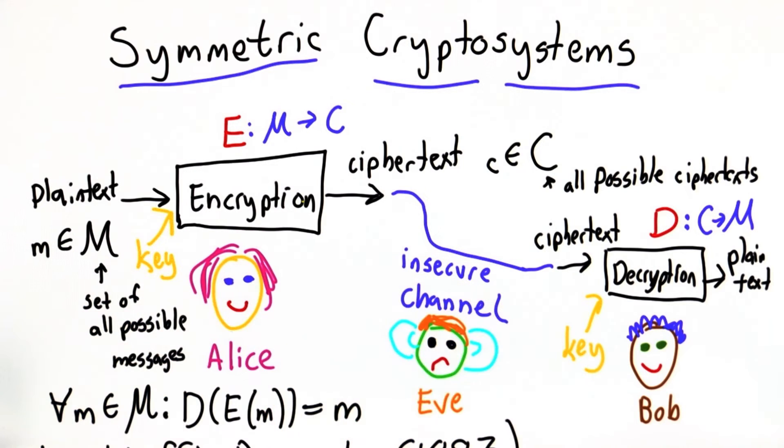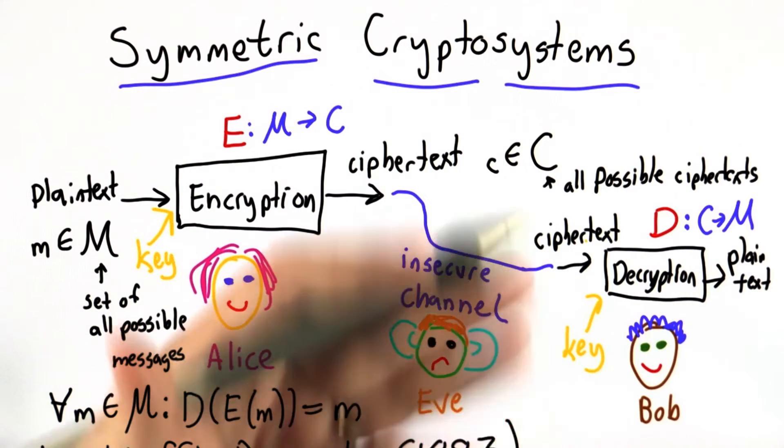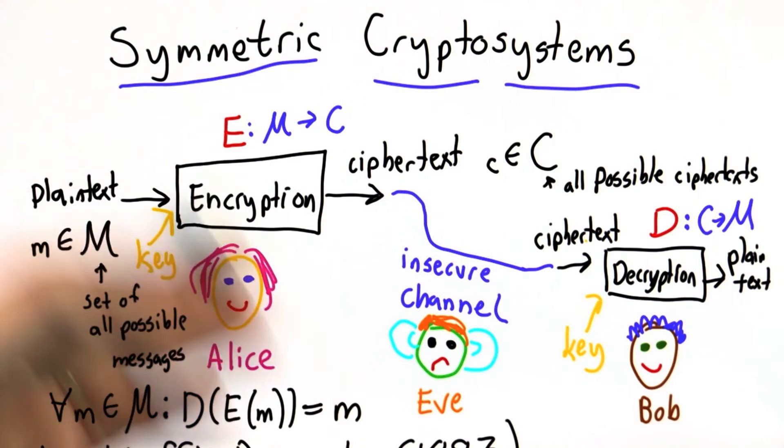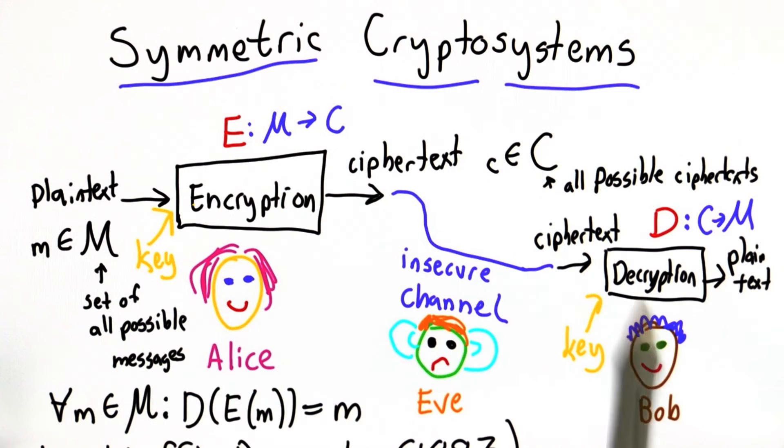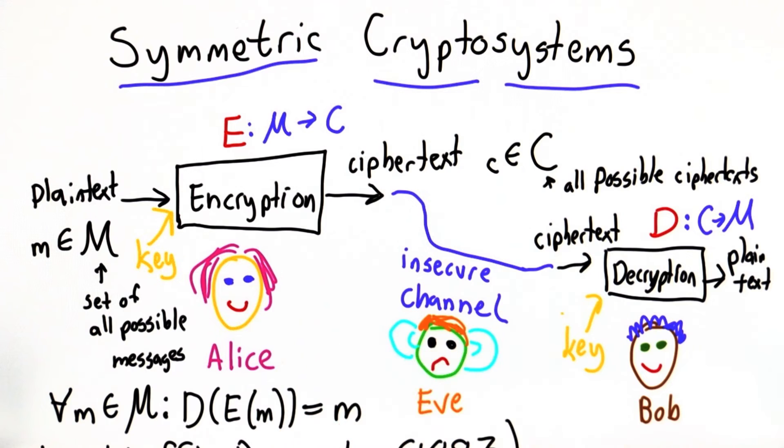If the security relies only on keeping the key secret, well then we can make our encryption and decryption functions public, we can analyze them, we can put a lot of work into developing good encryption and decryption functions, and then the security depends only on keeping the key secret. If we think our key has been exposed, well then we just need to come up with a new key, but we can keep using the same functions.